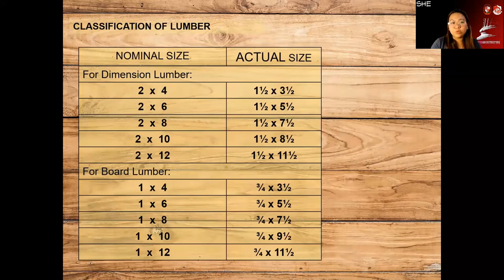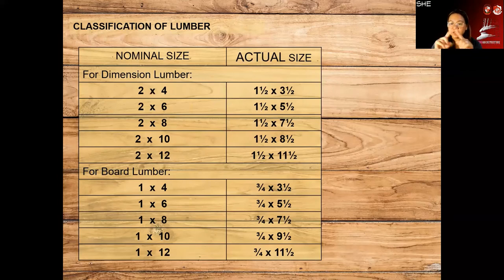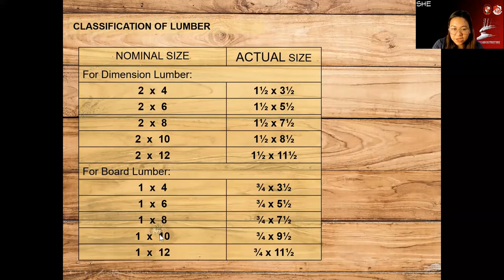For example, if you want a 2x4 lumber, the actual size could be 1.5 by 3.5 inches — reduced by half an inch because the sides were planed and smoothed. These are the common nominal sizes and their corresponding actual sizes.